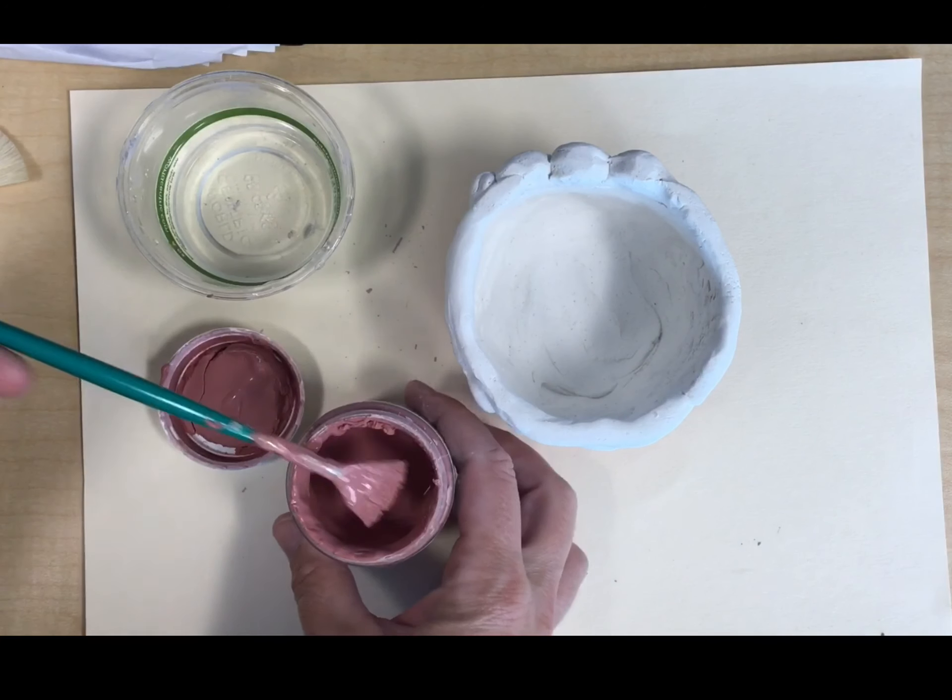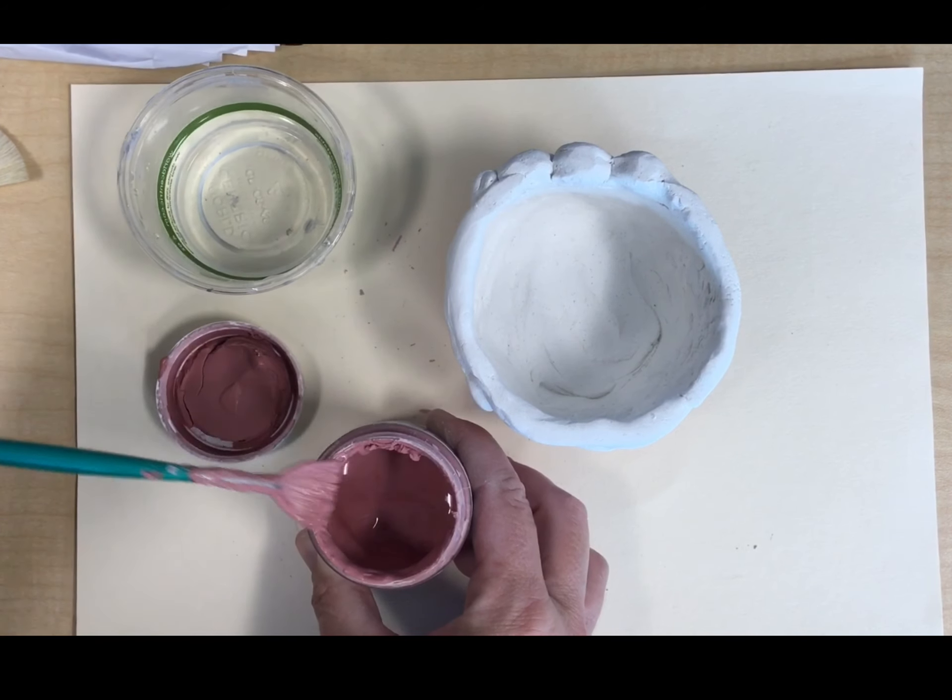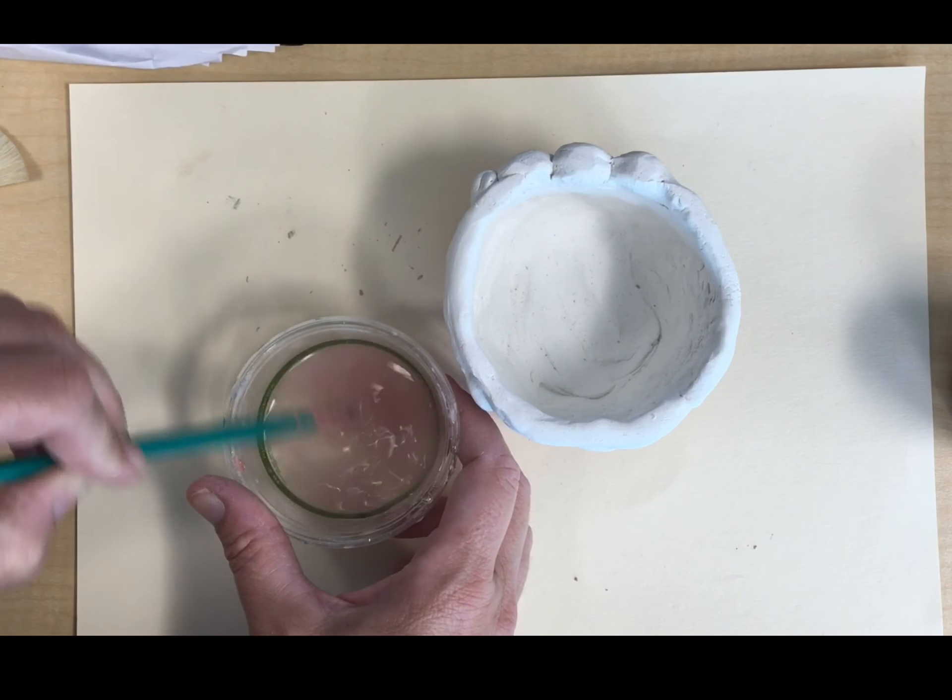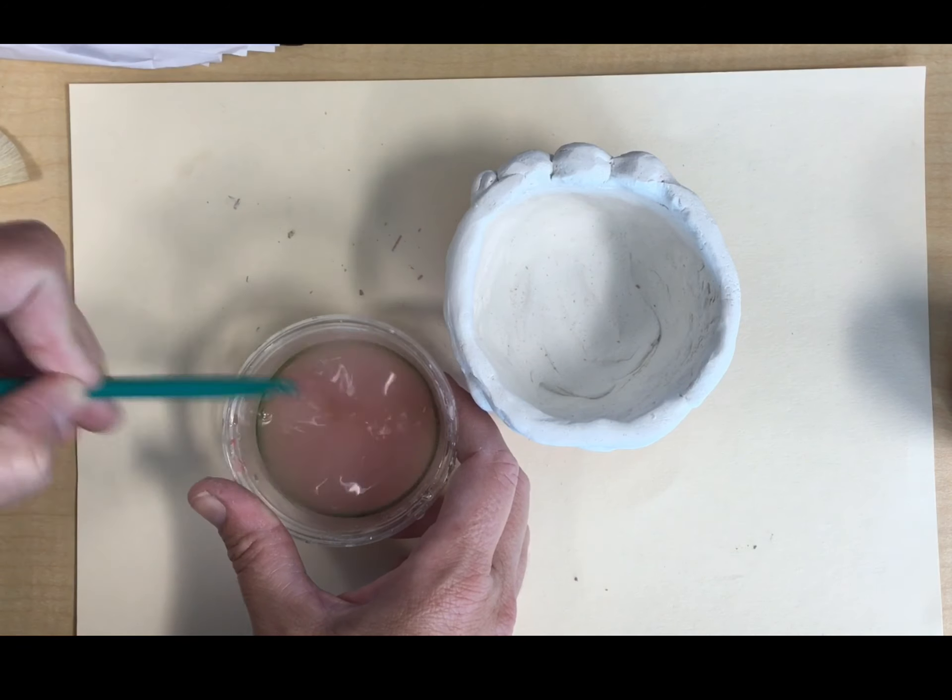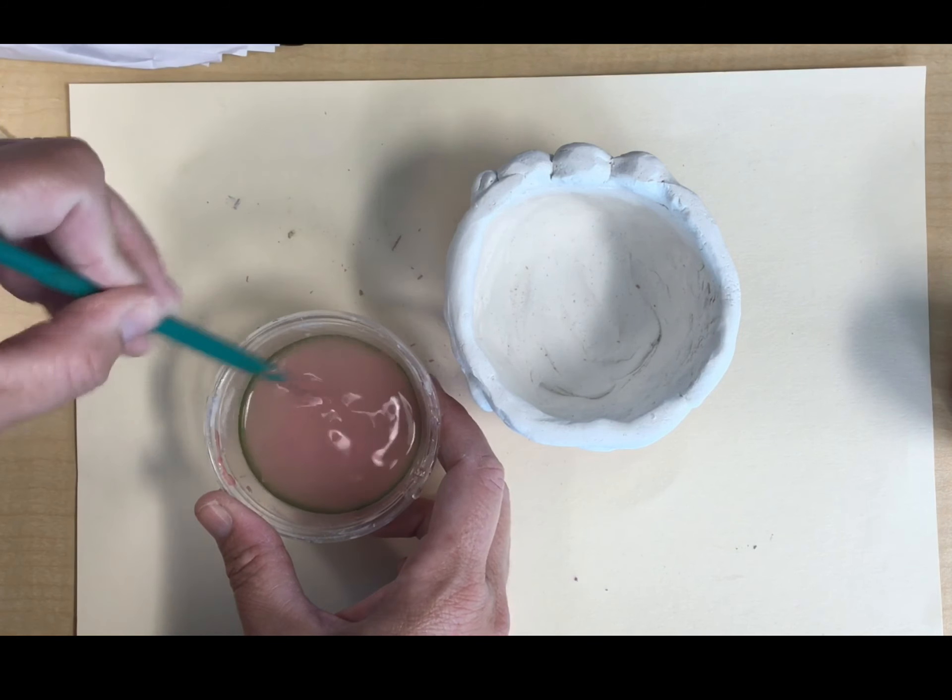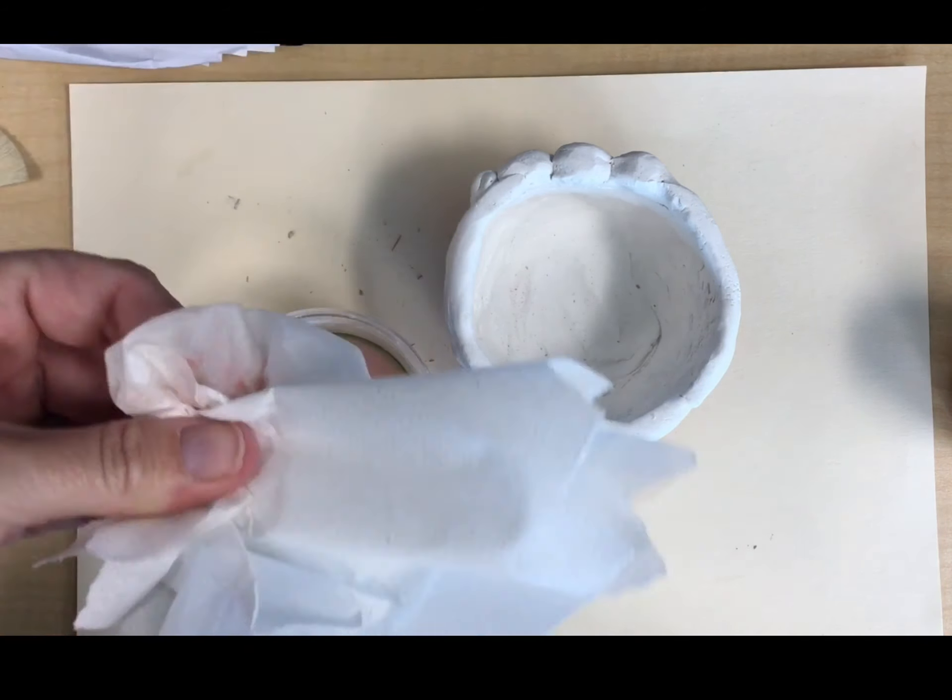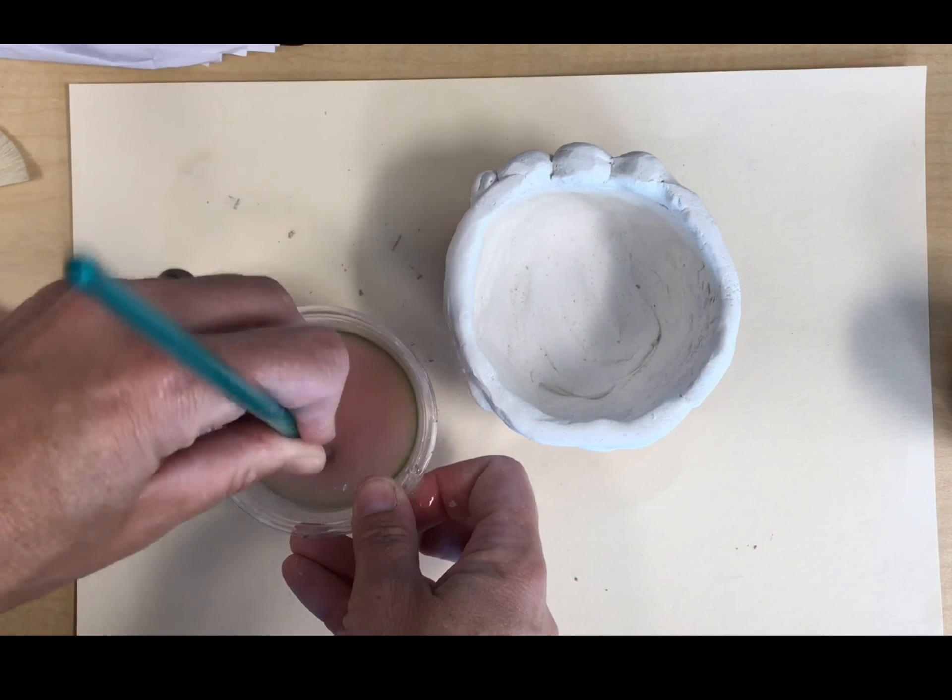First thing I want to do is get as much glaze off as I can back inside the container. To clean off your brush, you guys, make sure that you really kind of push it onto the bottom of the water container. Our goal is to make it super duper clean so that when we go into a new color, it's not going to mix. Notice I'm using the paper towels to dry it.